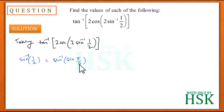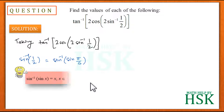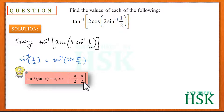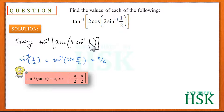Taking sin⁻¹(1/2), we can write this as sin⁻¹(sin(π/6)), because sin⁻¹(sin x) = x if x belongs to the closed interval [−π/2, π/2]. We know that sin(π/6) = 1/2, so sin⁻¹(1/2) gives us the value π/6.